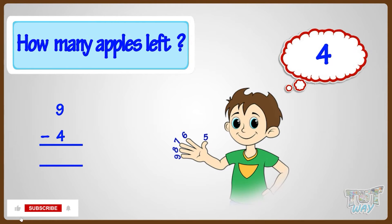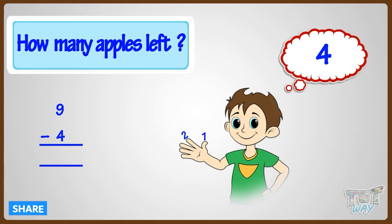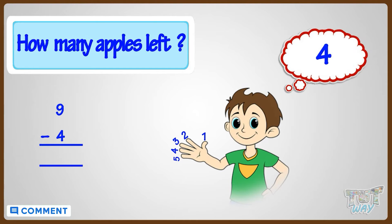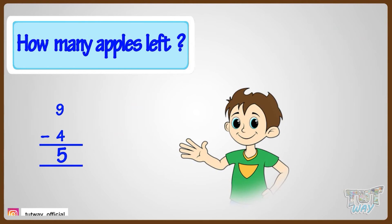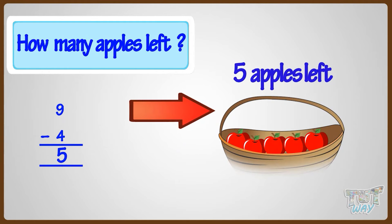Now count the fingers: one, two, three, four, five. Yeah! Nine minus four equals five.